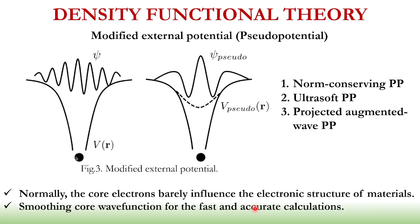Now, in Density Functional Theory, we also use this so-called modified external potential or this pseudopotential, because normally the core electrons barely influence the electronic structure of material. So we need to smoothen our core wave function for fast and accurate calculations. Now, there are many pseudopotentials available. We have the norm-conserving pseudopotential, the ultrasoft pseudopotential, and the projected augmented wave pseudopotential, which we will be discussing later in our next videos.